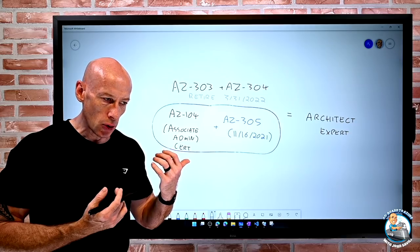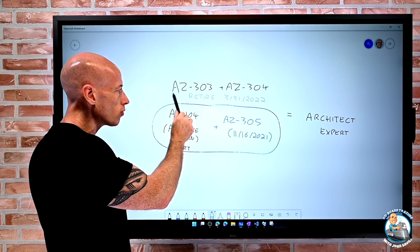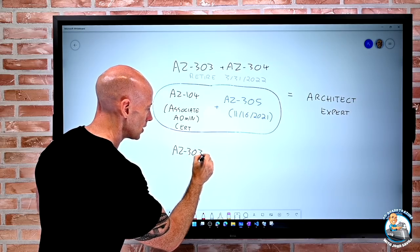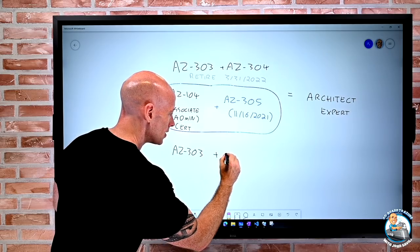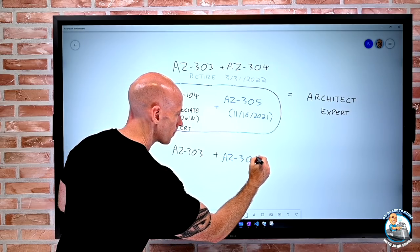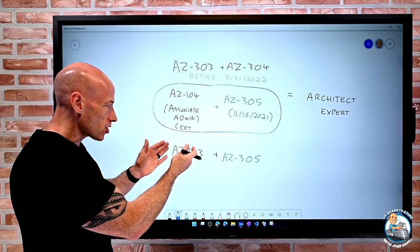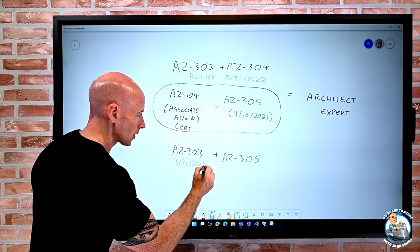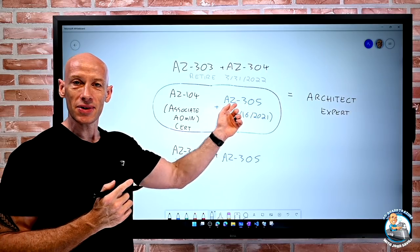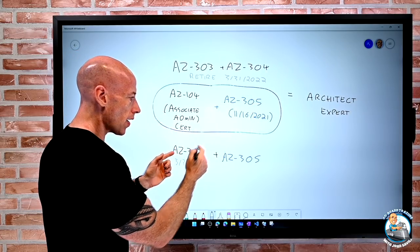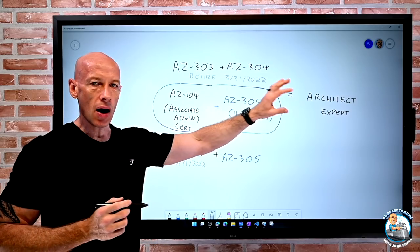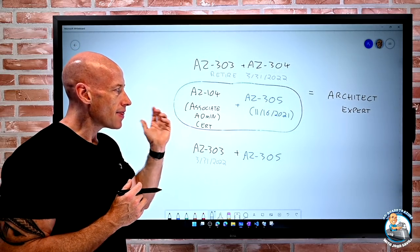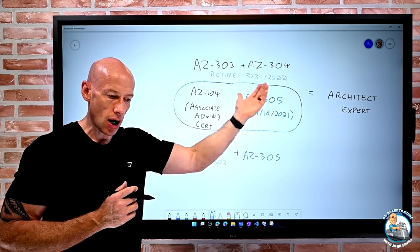But what I can also do is I could actually combine that AZ-303, so if I'm already maybe past my AZ-303, I can combine that with the AZ-305 to also get my Architect Expert certification before it retires. Remember this retires on the end of March basically. So at this precise moment in time or in a while when this becomes available, you could combine that with AZ-303 to get my Architect cert. But this is the future direction. Hey, I get my Associate Admin certification and then I take the AZ-305 to get that Azure Solutions Architect Expert certification.